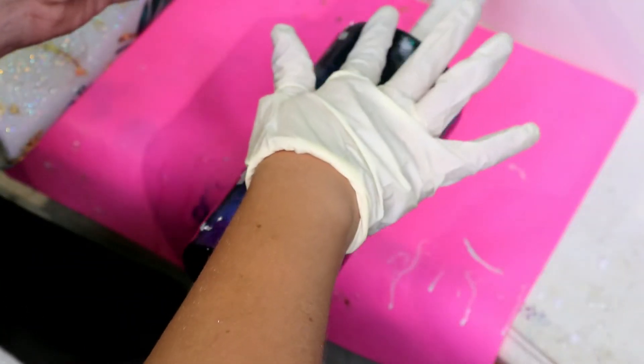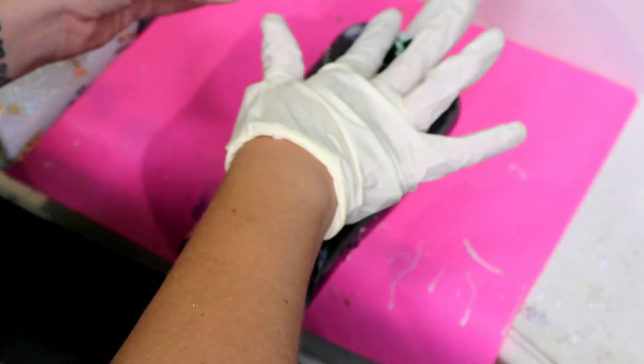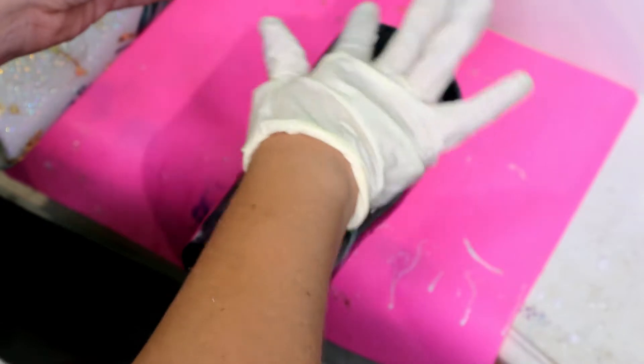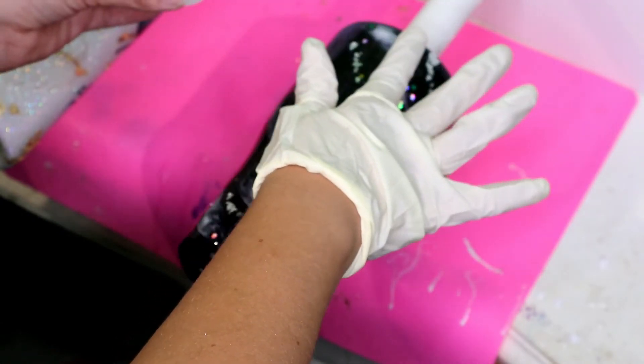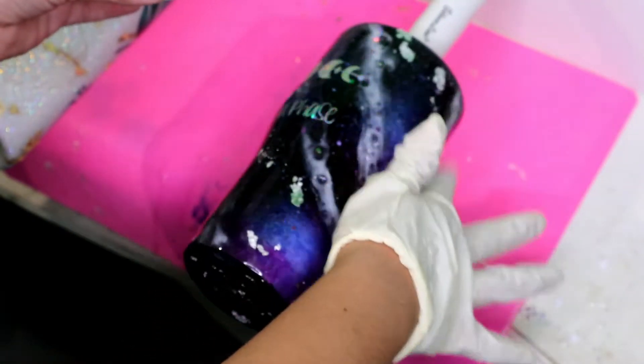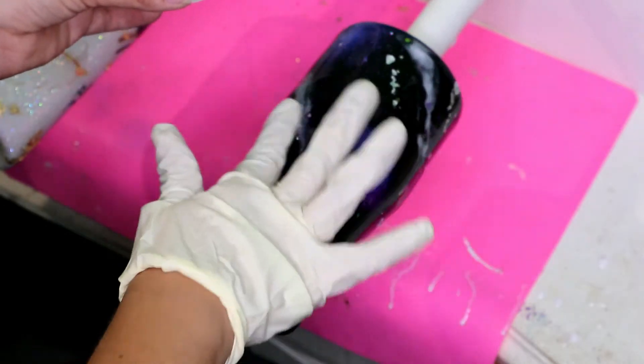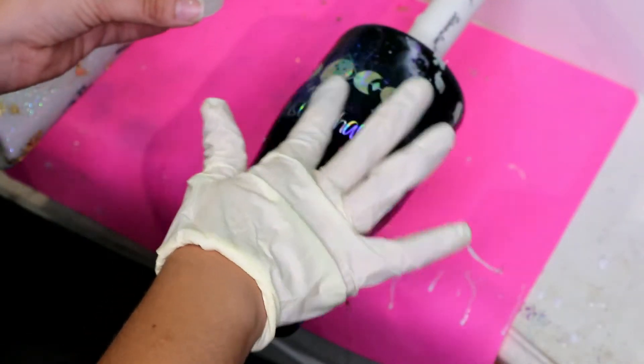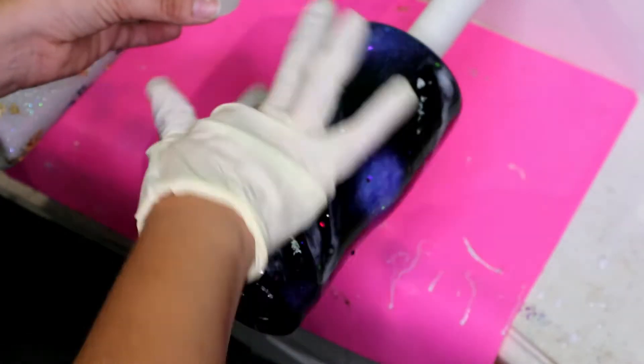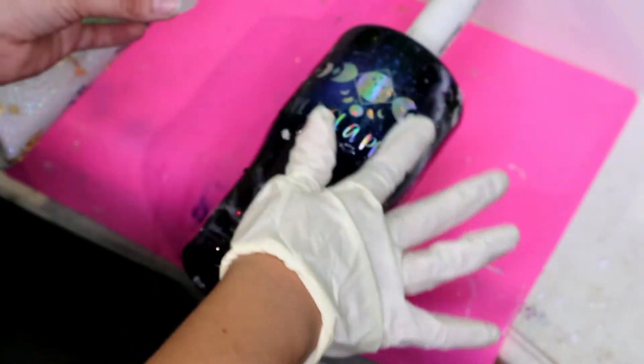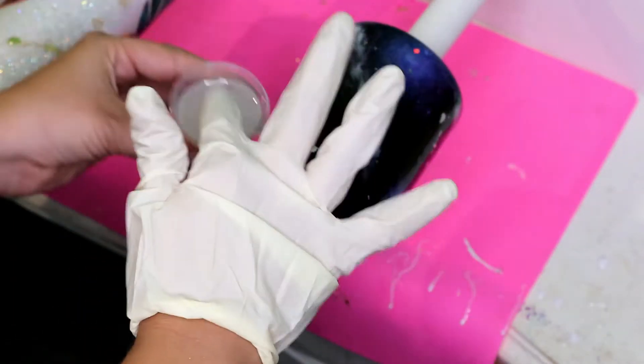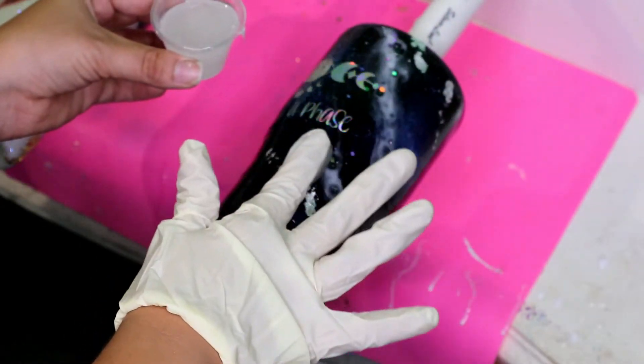So once your Mod Podge dries underneath your foil flakes, you are ready for your final layer of epoxy. Of course, you're going to want to epoxy until smooth. Sand anything if you need to sand it. I didn't need to do too much on this cup. I did have an issue with some gnats though. Two gnats got in this cup when it was on its final layer. So I did have to sand those down and put another layer on. But after that, it was complete.